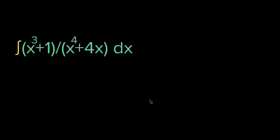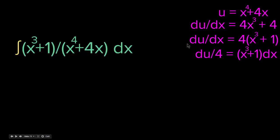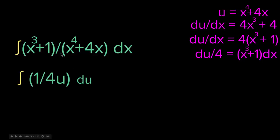Last example: the integral of (x³ + 1) / (x⁴ + 4x) dx. It looks ugly but it's simple. We assign u = x⁴ + 4x; then du/dx = 4x³ + 4, so du = (4x³ + 4) dx. Dividing by 4: du/4 = (x³ + 1) dx. So (x³ + 1) dx in the integral is replaced by du/4, and x⁴ + 4x is replaced by u, giving the integral of 1/(4u) du.